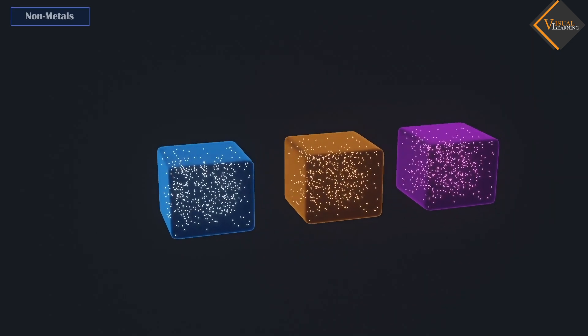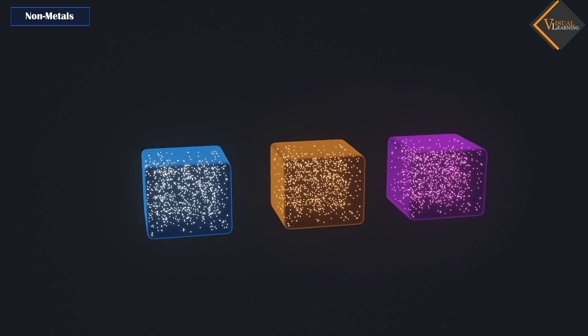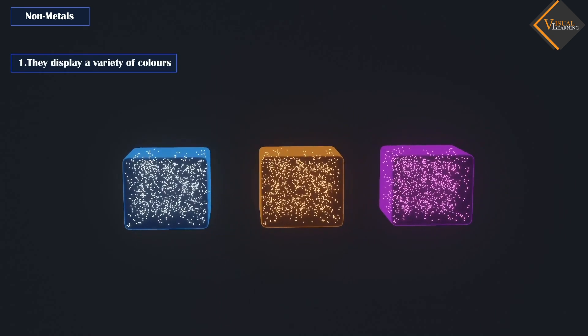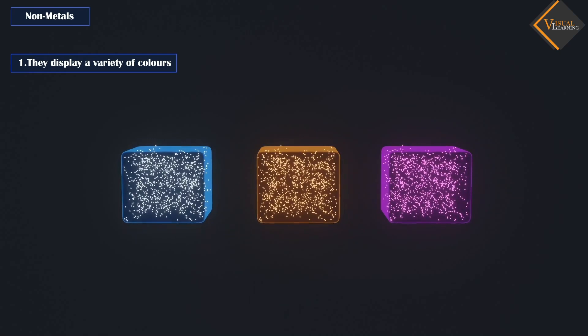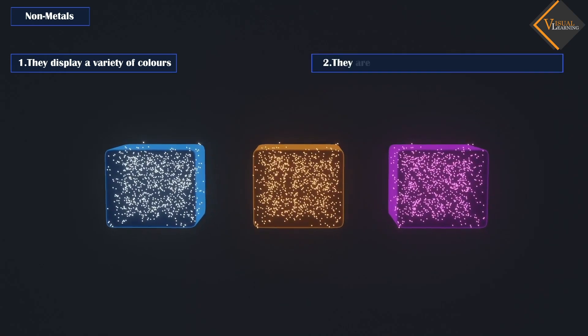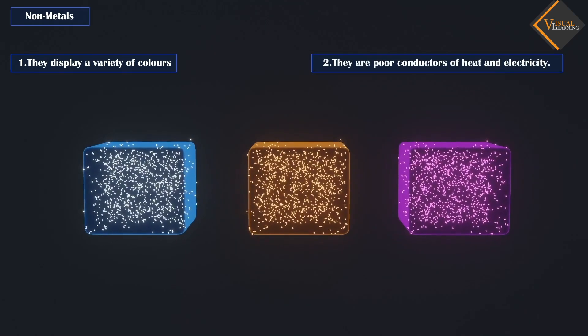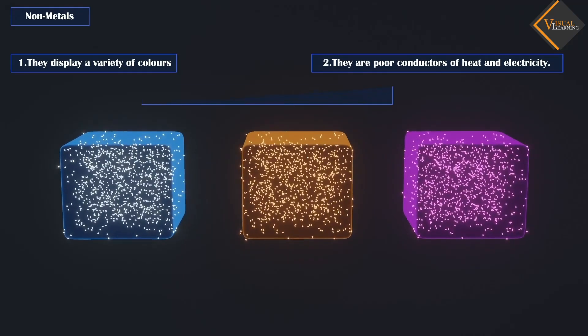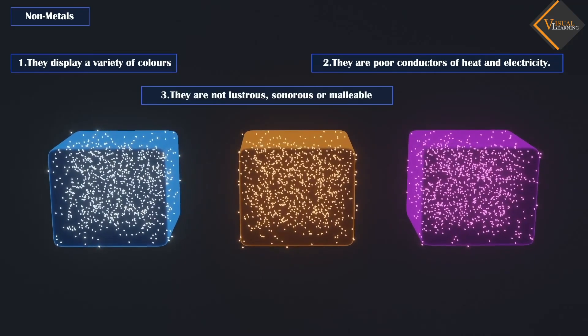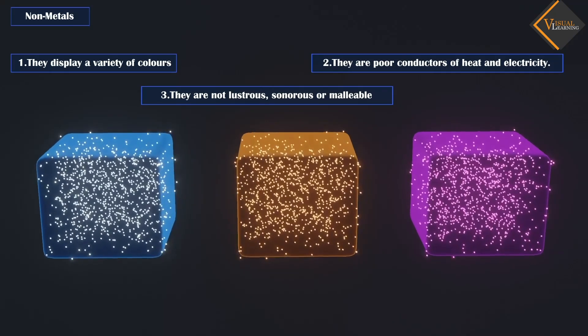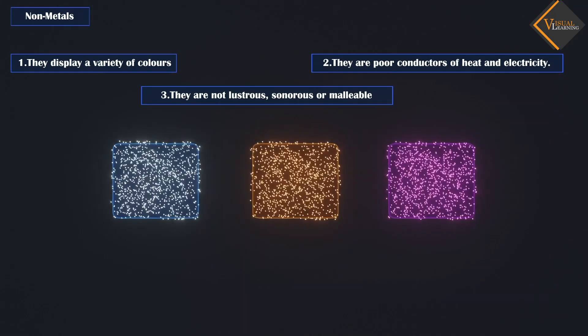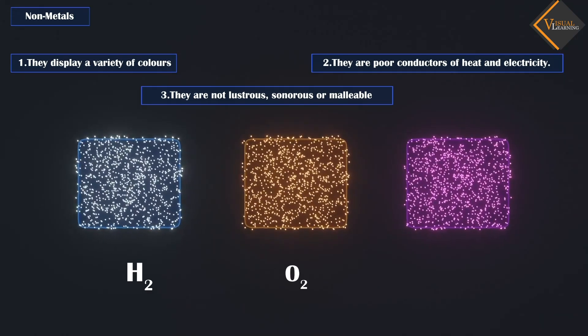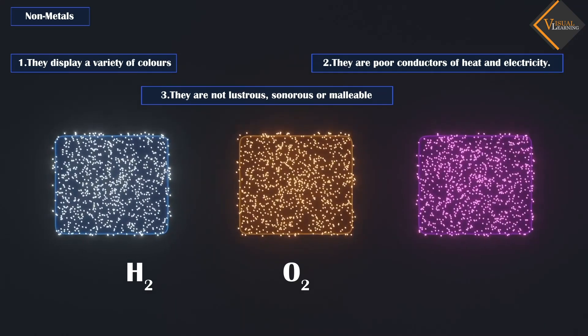Nonmetals usually show some of the following properties. They display a variety of colors. They are poor conductors of heat and electricity. They are not lustrous, sonorous, or malleable. Examples of nonmetals are hydrogen, oxygen, and iodine.